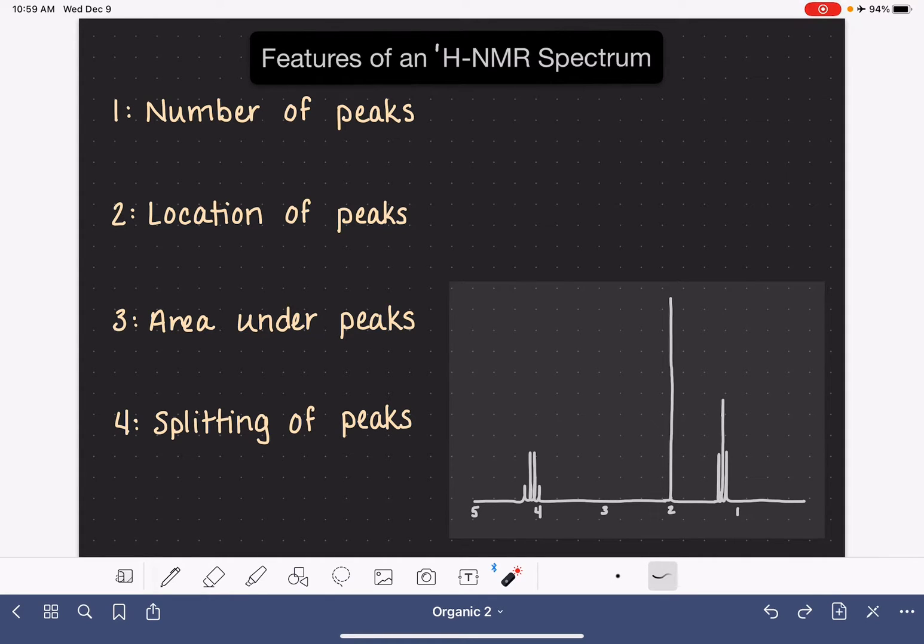So when we're analyzing a proton NMR spectrum, the first thing that we want to look at is the number of peaks in the spectrum. Each peak in a spectrum corresponds to a unique type of hydrogen atom. So the number of peaks gives us the number of unique types of hydrogens.